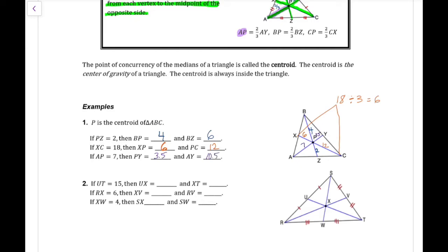Let's look at example two. If UT equals 15, we're finding UX. The whole thing is 15. What I want to do is divide that by three and I get five for the short side. So the long side would be 10. So UX would be 5 and XT would be 10.